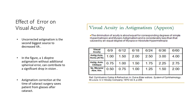Many decades back, Duke Elder gave us a chart showing that uncorrected astigmatism is the second biggest source of visual acuity loss. A patient with about 0.5 diopters of myopia or hyperopia has vision dropping to around 6/9, but a patient with 0.75 diopters of astigmatism shows an equal drop in visual acuity.